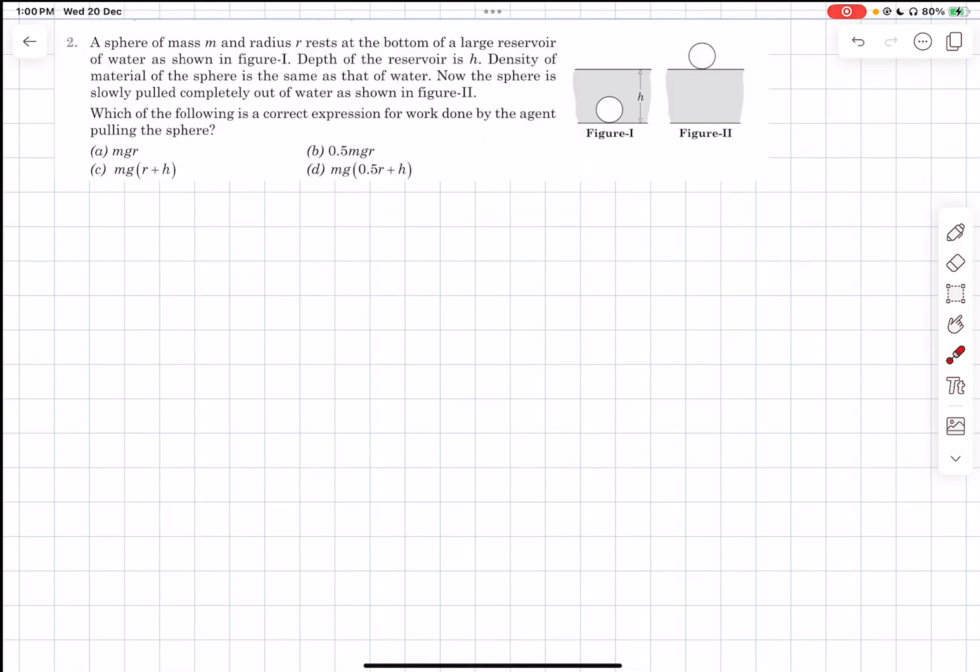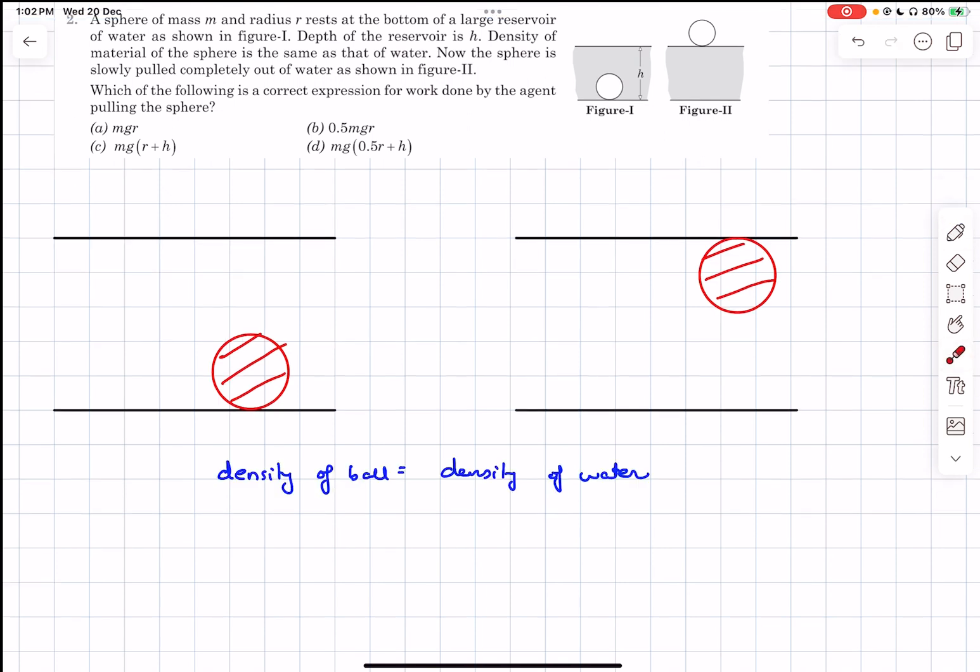Continuing with problem two, we have a sphere of mass M and radius R that rests at the bottom of a large reservoir. Depth of the reservoir is H. Density of the material of the sphere is same as that of the water. Now the sphere is slowly pulled completely out of water. So we have to talk about the work done by the agent that is pulling the sphere.